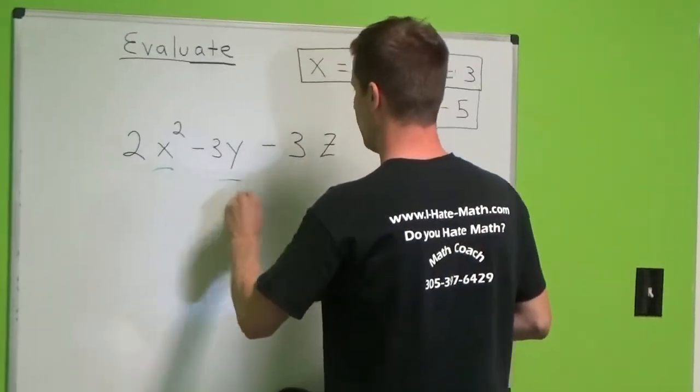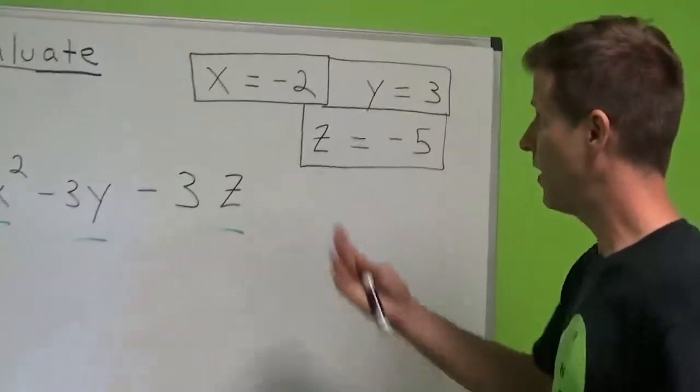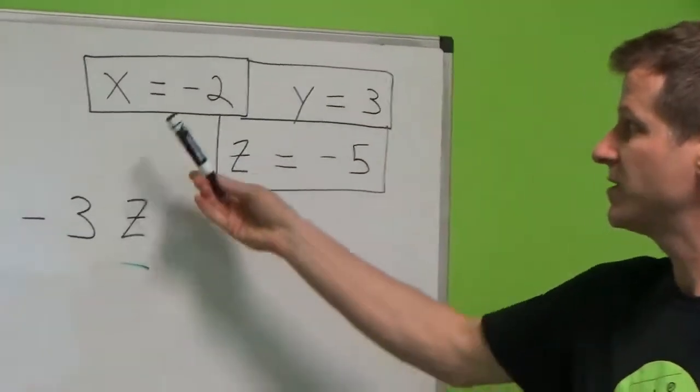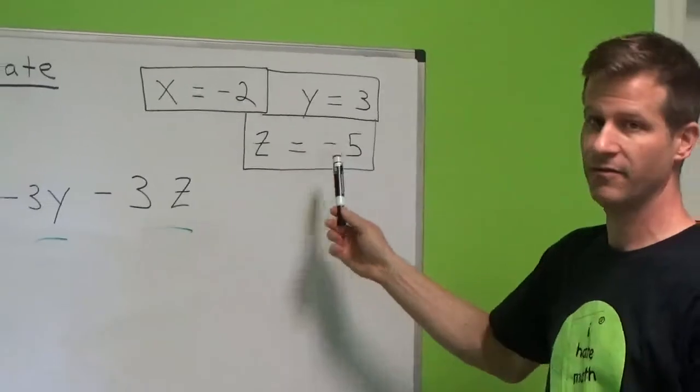We have x, y, and z. In the box, I have x is equal to negative 2, y is equal to 3, and z is equal to negative 5.